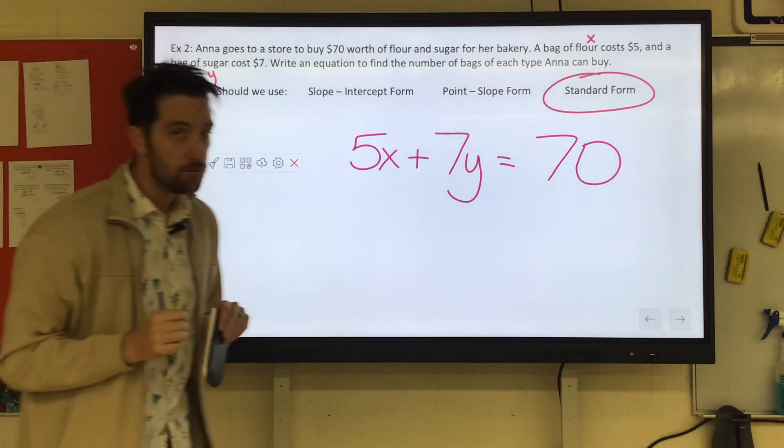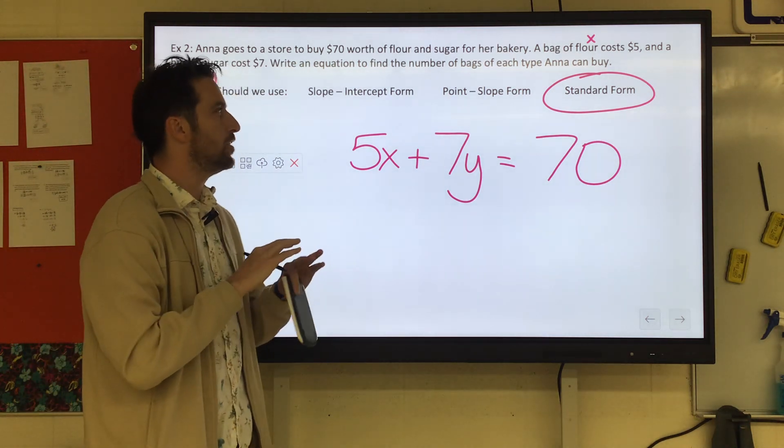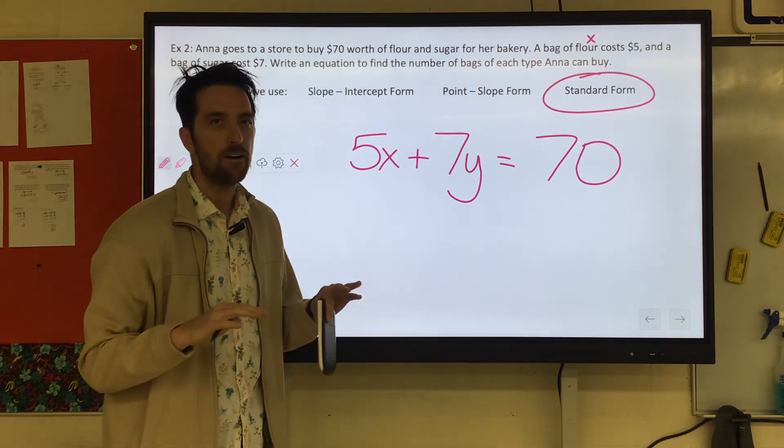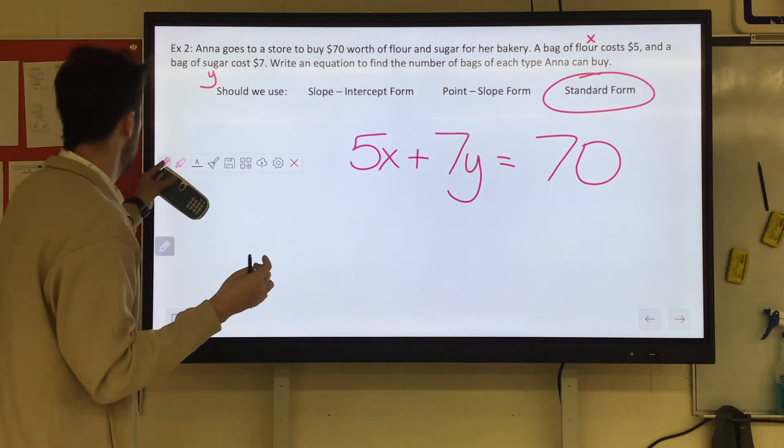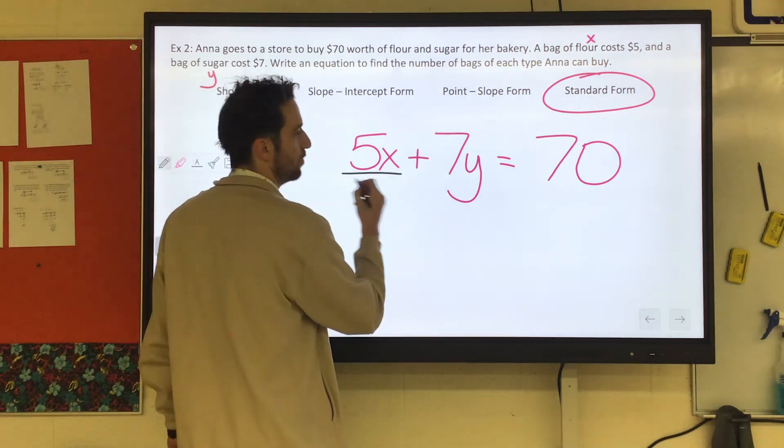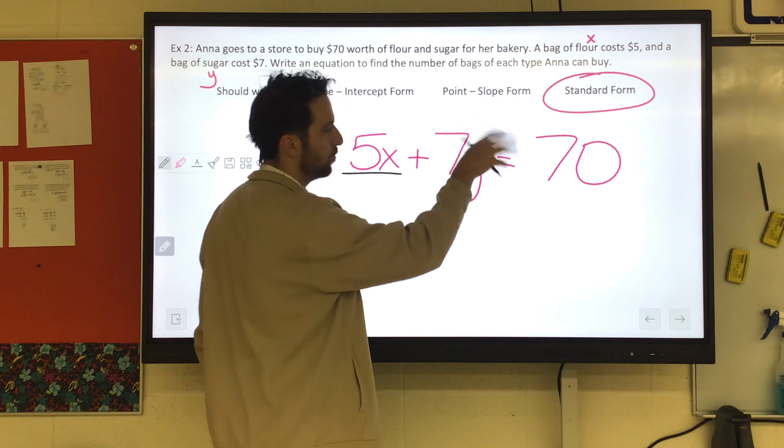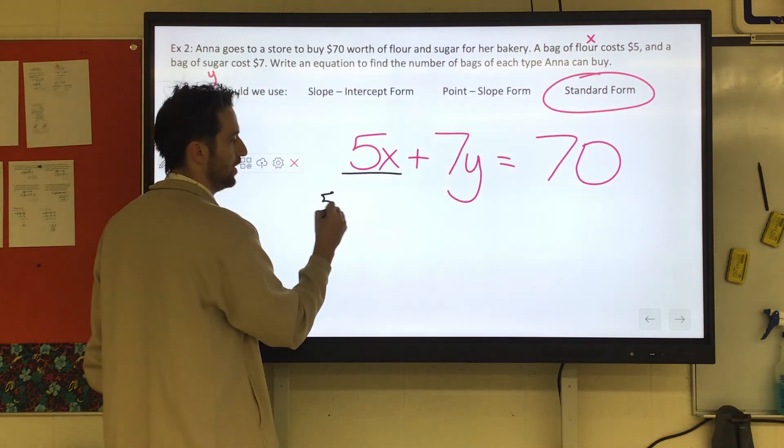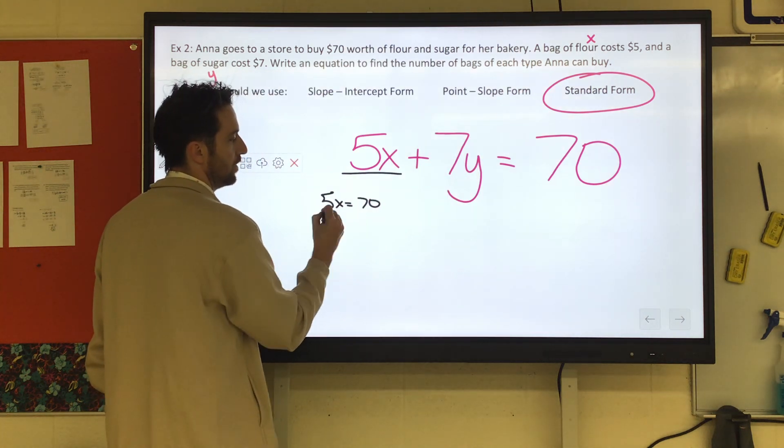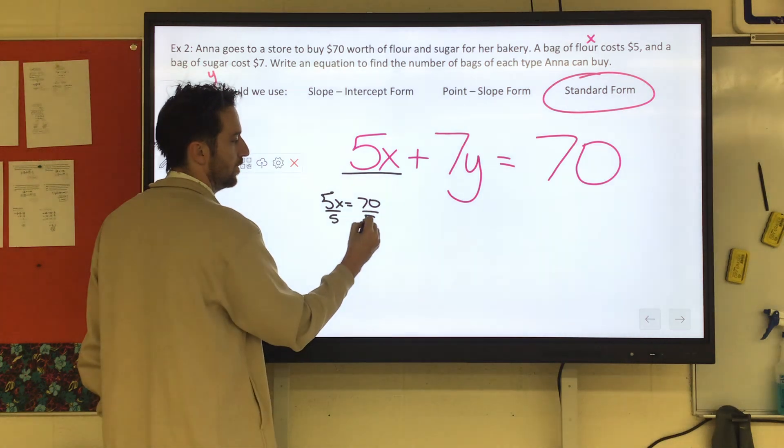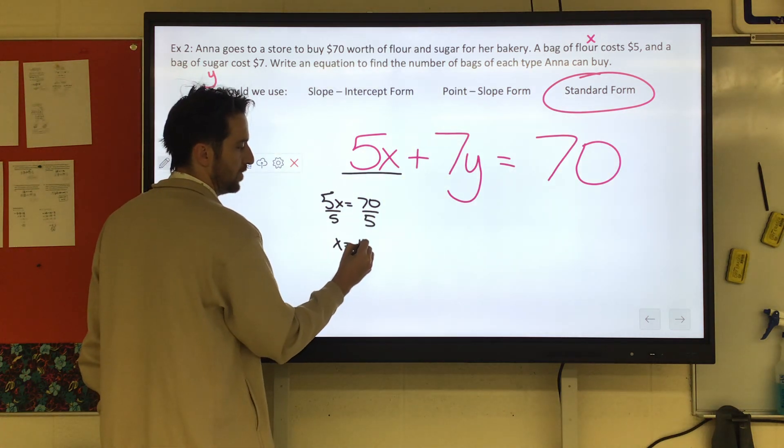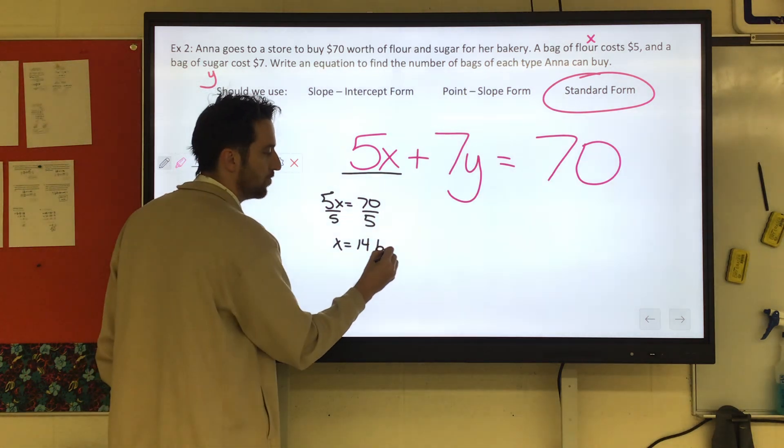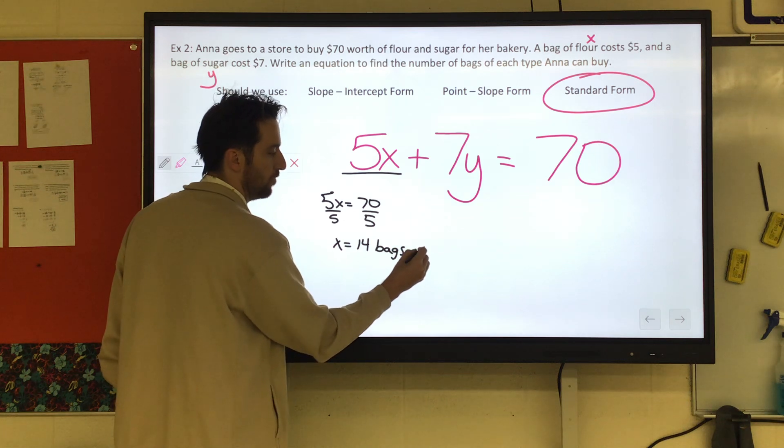Now, if I took this next level with you, and I said, well, what if they just bought flour? How many bags of flour could they buy? This is where we'd be like, oh, okay. Substitute in zero for y, you have 5x equals 70. You divide by 5, it comes out to 14. So you could get 14 bags of flour if you only bought flour.